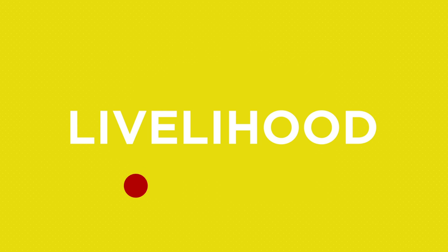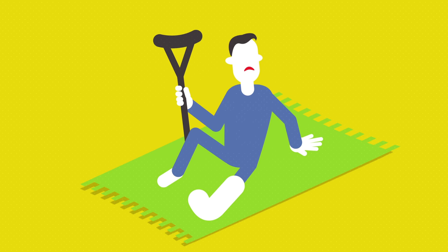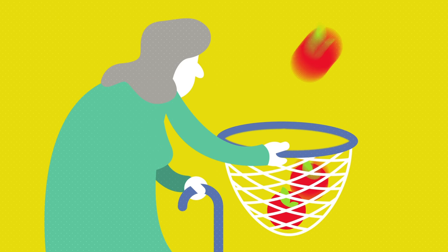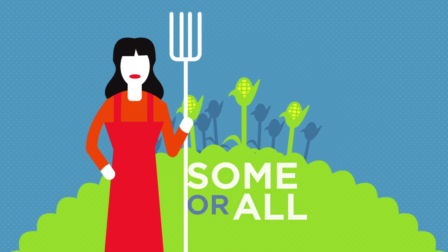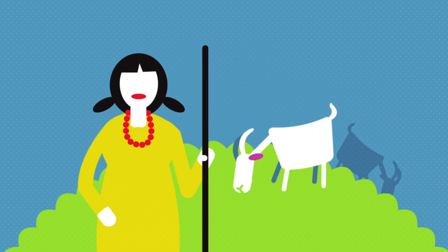If a livelihood is not possible, say if someone is sick or elderly, a safety net is needed for people to access food. In developing countries, many people get some or all of their food and income by growing crops, gathering food, fishing, or raising animals.